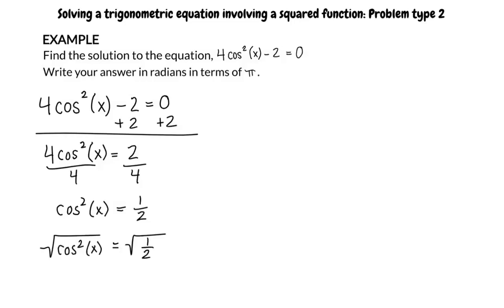We then need to square root both sides of the equation to get rid of the square over cosine of x. When we do this, we get cosine of x equals plus or minus square root of 1 half.